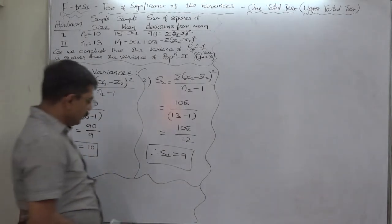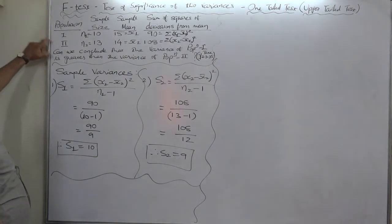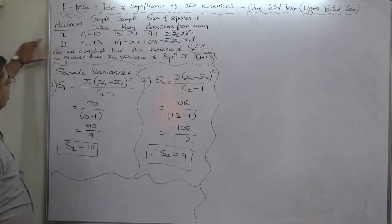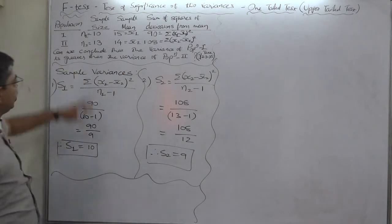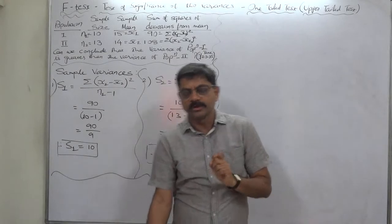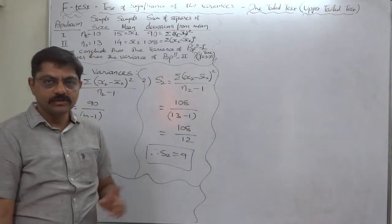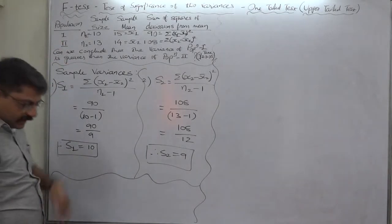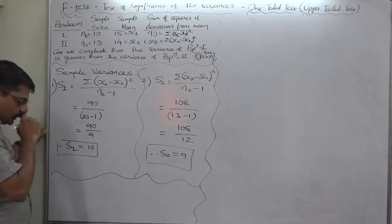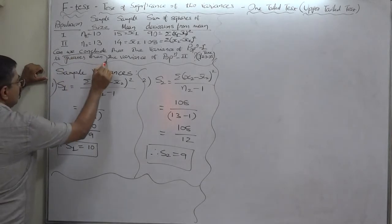It is given that alpha = 0.05. The question asks: can we conclude that the variance of population 1 is greater than the variance of population 2? This is clearly a one-tail test and this is the alternative hypothesis. The null hypothesis is always of no difference.